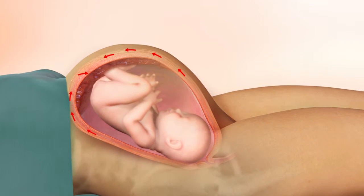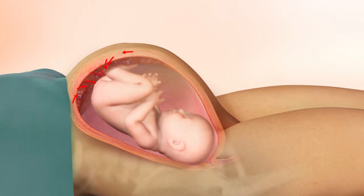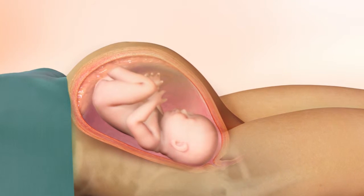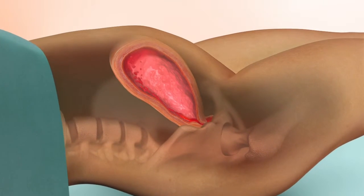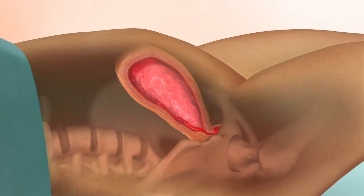The uterine arteries pump 500 to 700 milliliters per minute into the site at which the placenta is attached to the uterus. After birth, this blood could potentially flow into the uterine cavity and be lost from circulation.